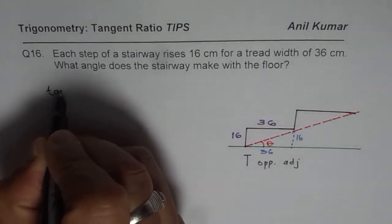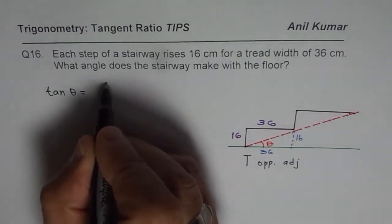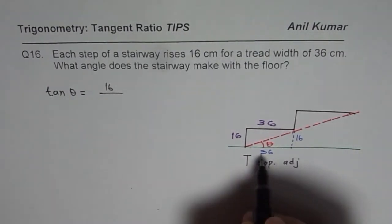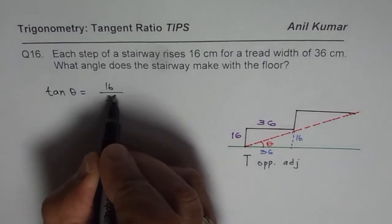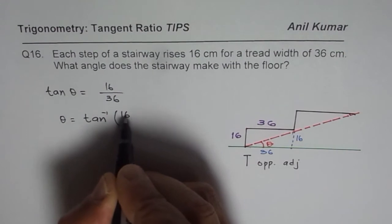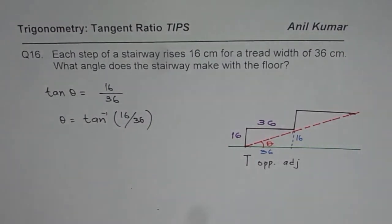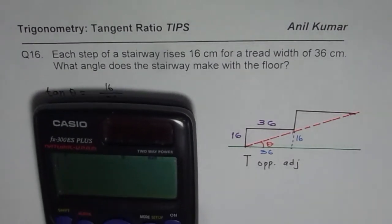So we can say tan theta equals opposite side is 16 over 36. So theta equals tan inverse of 16 over 36. And we can use the calculator to find this answer.